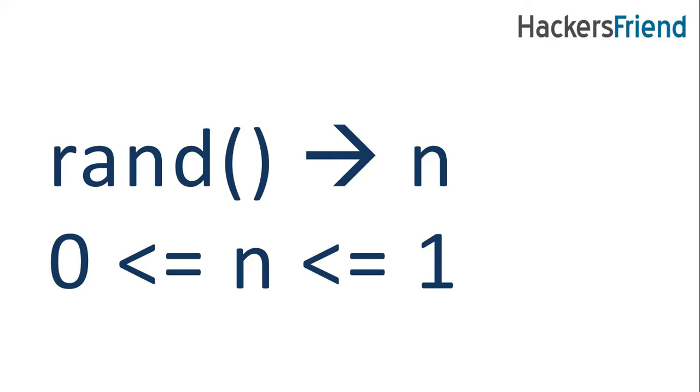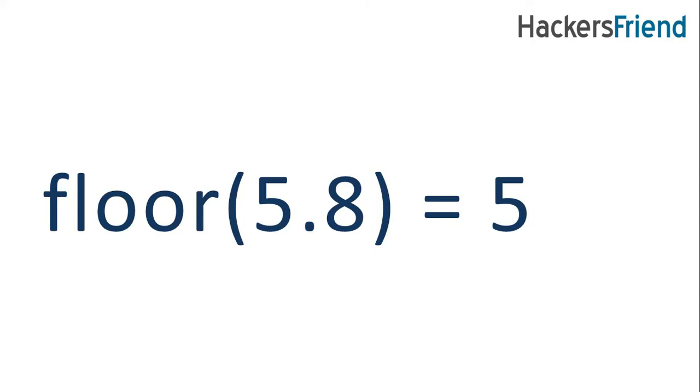Moving ahead, we are given a function rand that gives a value from 0 to 1, that is 0.1, 0.4, or any value, and we are given a function called floor. Floor returns the most significant integer from any given value. So with this in our hand, let's start building our solution.